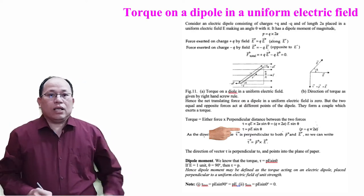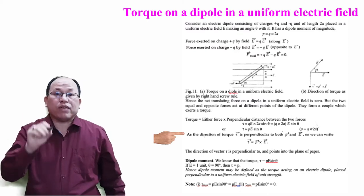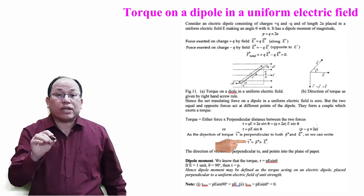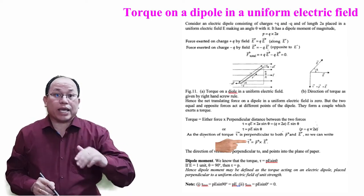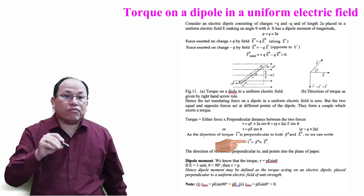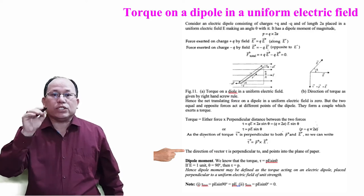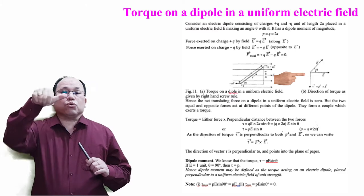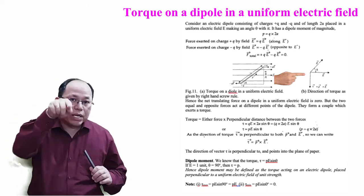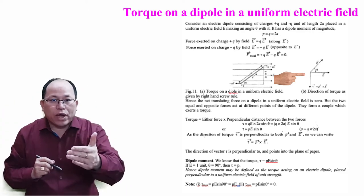The direction of torque tau vector is perpendicular to both p vector and E vector. So we can write in vector form: tau vector equals p vector cross E vector, because from class 11, |a| |b| sin theta equals |a cross b|. It is a vector quantity. The direction of torque is perpendicular to and points into the plane of paper, determined by the right-hand screw rule.